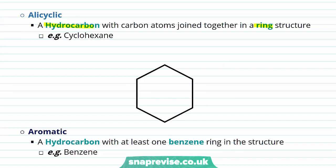Let's go ahead and try to derive the formula for cyclohexane. Each of the corners of our skeletal formula represents a carbon, so that's 6 carbons — C6. Each of these carbons will be covalently bonded to two other hydrogens, so that would give us C6H12.